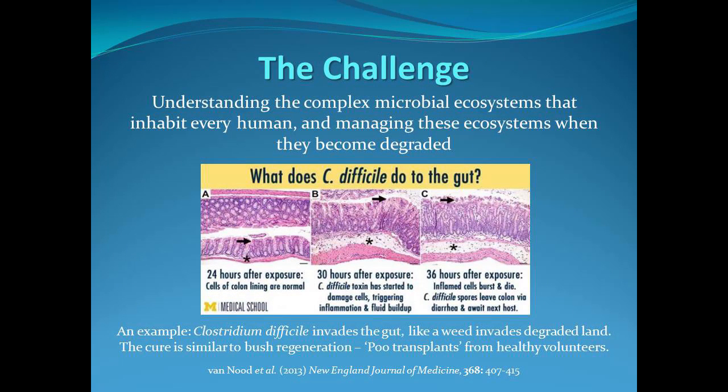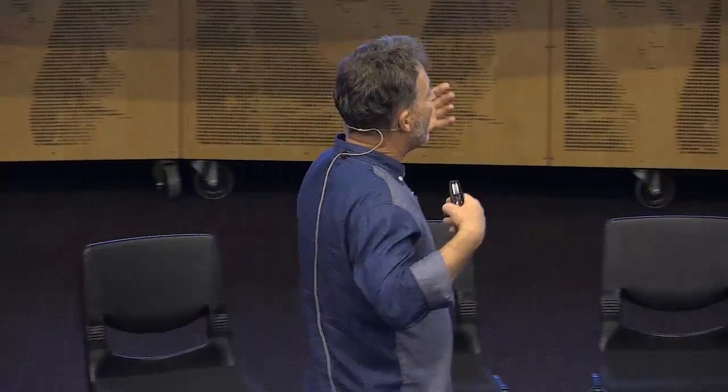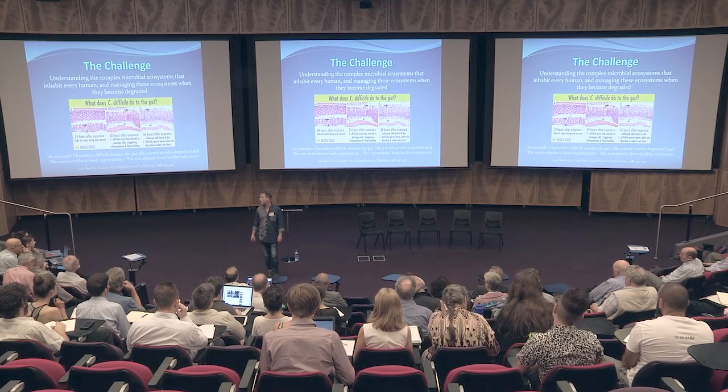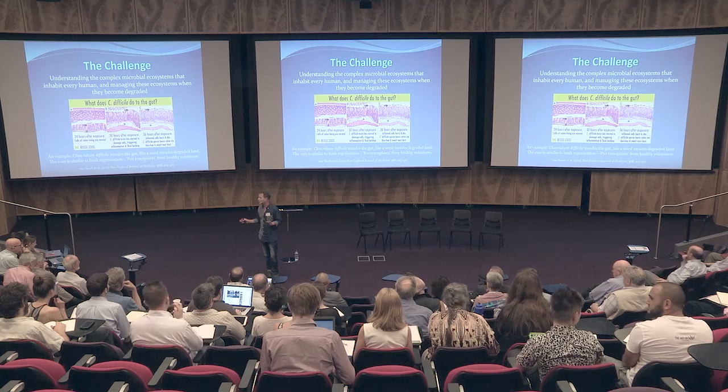The challenge is to understand these microbial ecosystems - so far we haven't had much luck with therapies, with one exception: C. diff, or Clostridium difficile, a nasty diarrheal disease that breaks down the intestinal lining and often happens after antibiotic therapy. Everything else is gone and this organism comes in and takes over - it's like an invasive species, the cane toad of the human gut. The solution is similar to bush regeneration: a fecal transplant from a donor with a good microbiota, and it's extraordinarily successful.